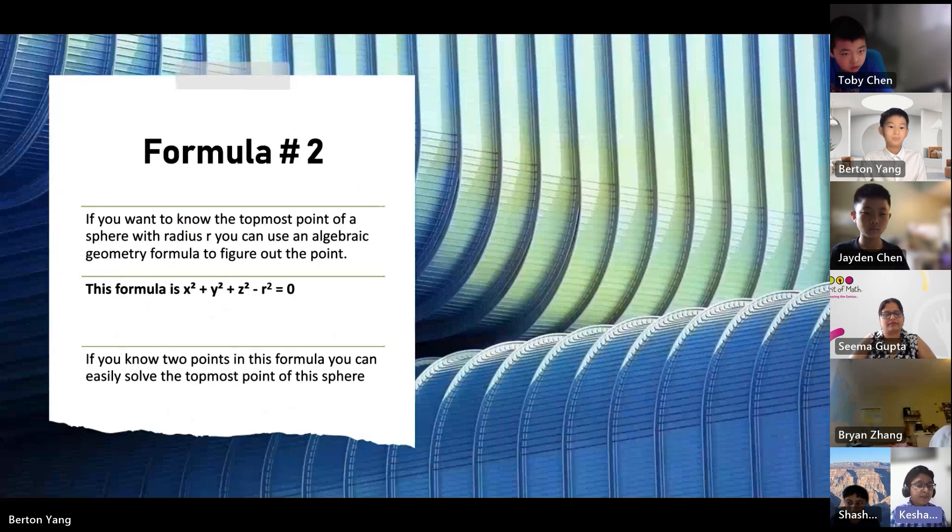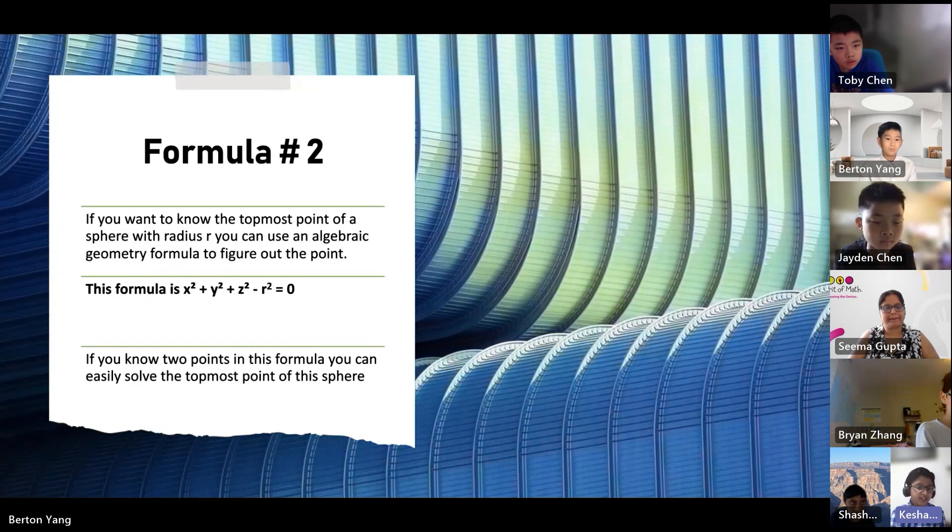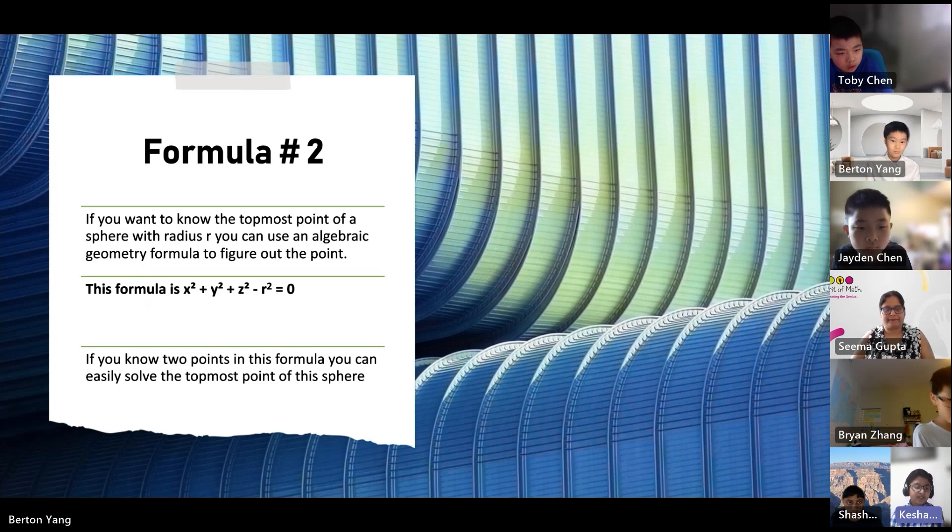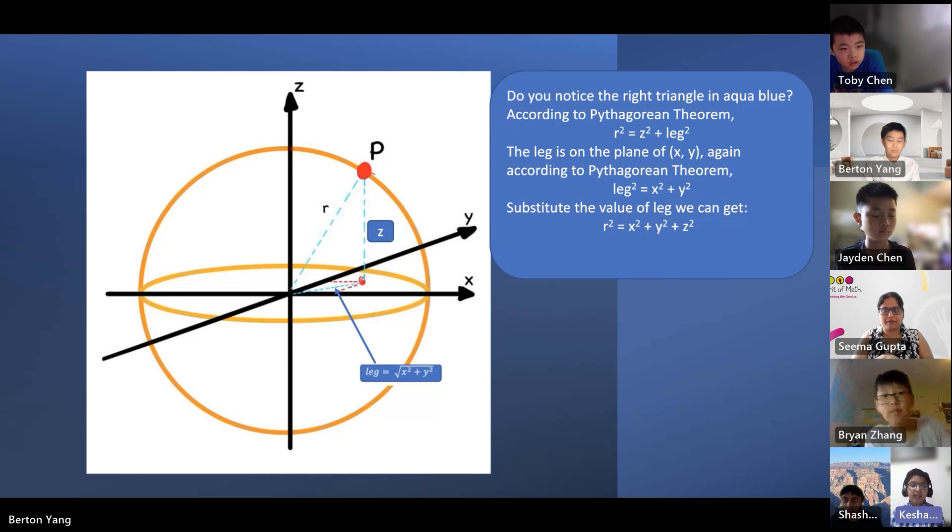Formula number two. If you wanted to know the topmost point of a sphere with radius r, you can use an algebraic geometry formula to figure out the point. This formula is x squared plus y squared plus z squared minus r squared equals 0. If you know two points in this formula, you can easily solve the topmost point of the sphere. Then you notice the right triangle. According to Pythagorean theorem, r squared equals z squared plus leg squared. The leg is in the plane of x and y. Again, according to the Pythagorean theorem, leg squared equals x squared plus y squared. Substitute the value of leg and we can get r squared equals x squared plus y squared plus z squared.